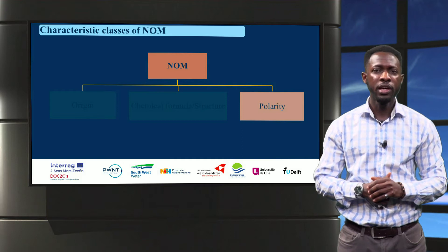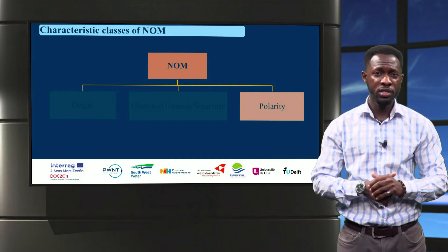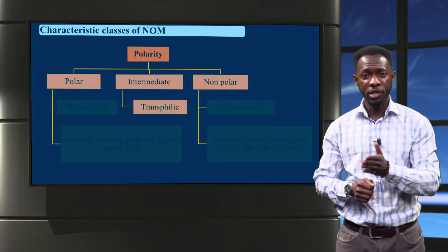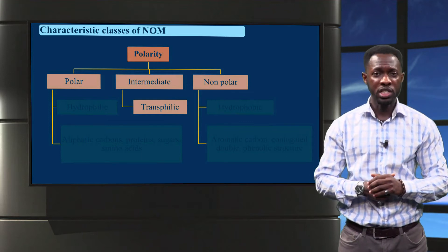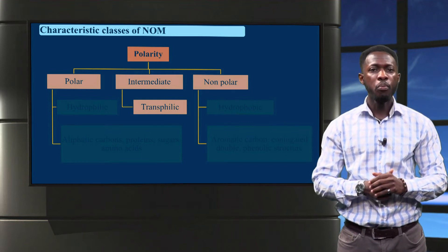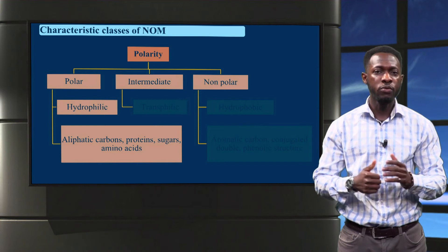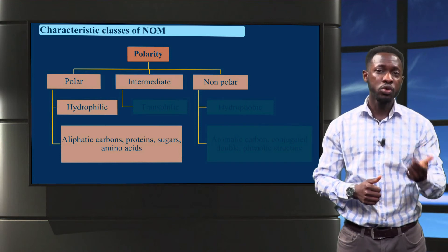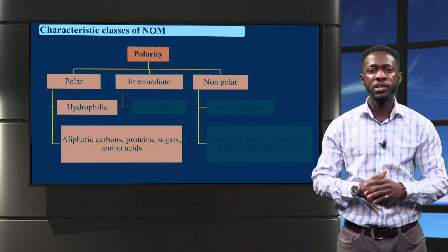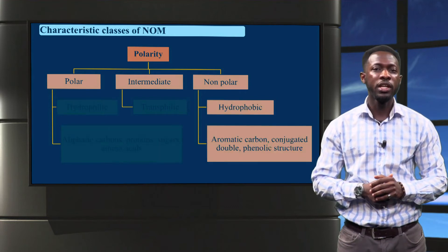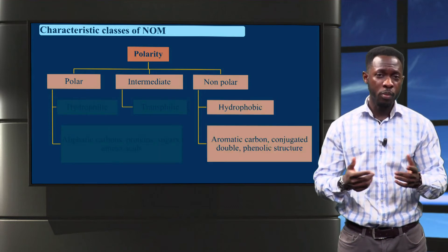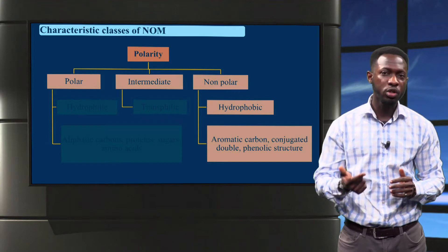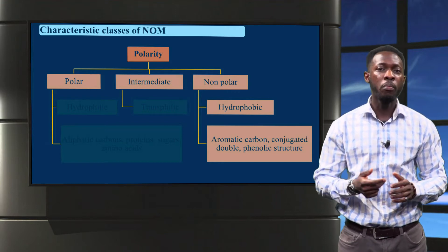The last class we will look at is polarity. The components of NOM can either be polar, non-polar, or intermediate — often called transphilic. Polar fractions consist of hydrophilic compounds such as aliphatic carbons, proteins, sugars and amino acids. Non-polar fractions, on the other hand, consist of hydrophobic compounds such as aromatic carbons, conjugated double bonds, and phenolic compounds.